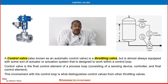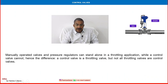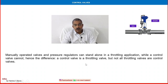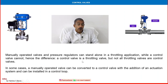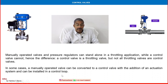Many other types of throttling valves may exist, but control valve is distinguished from others because it is part of a control loop. Manual operator valves and pressure regulators can stand alone in a throttling application, while a control valve cannot. The difference is: a control valve is a throttling valve, but not all throttling valves are control valves. In some cases, a manual operator valve can be converted into a control valve with the addition of an actuation system and installed in a control loop.